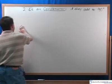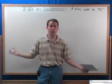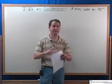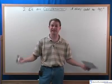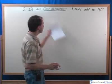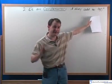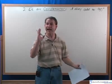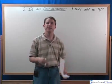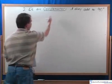So angle A and angle B, angle A is 45 degrees, angle B is 45 degrees. A plus B, 45 plus 45 equals 90 degrees. If they add up to exactly 90 degrees, exactly, not 91, not 97, not 84, but if they add up to exactly 90 degrees, then we say that they are complementary angles.